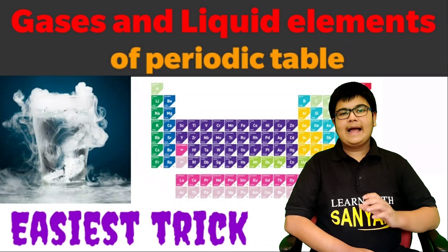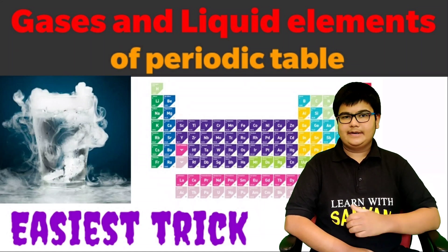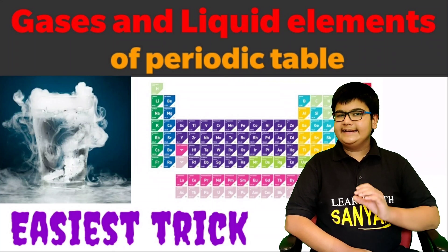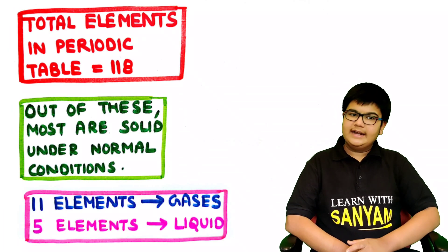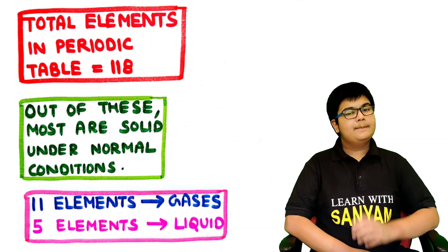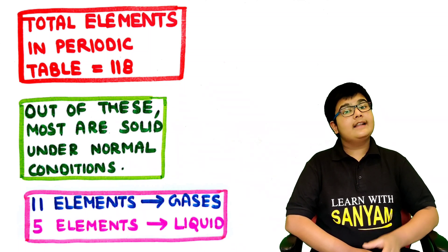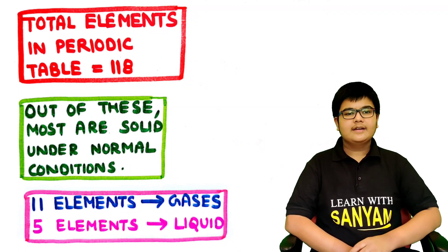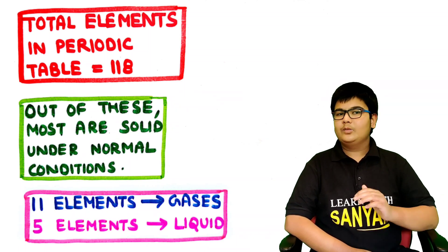Hi friends, I am back with another amazing trick to remember all the liquid and gaseous elements of the periodic table. There are a total of 118 elements in the periodic table. Out of these, most are solid at normal conditions, but 11 elements are gaseous and 5 elements are liquid under normal conditions. In this video, we shall learn a mnemonic to memorize all these gaseous and liquid elements. Now let's start with the trick.